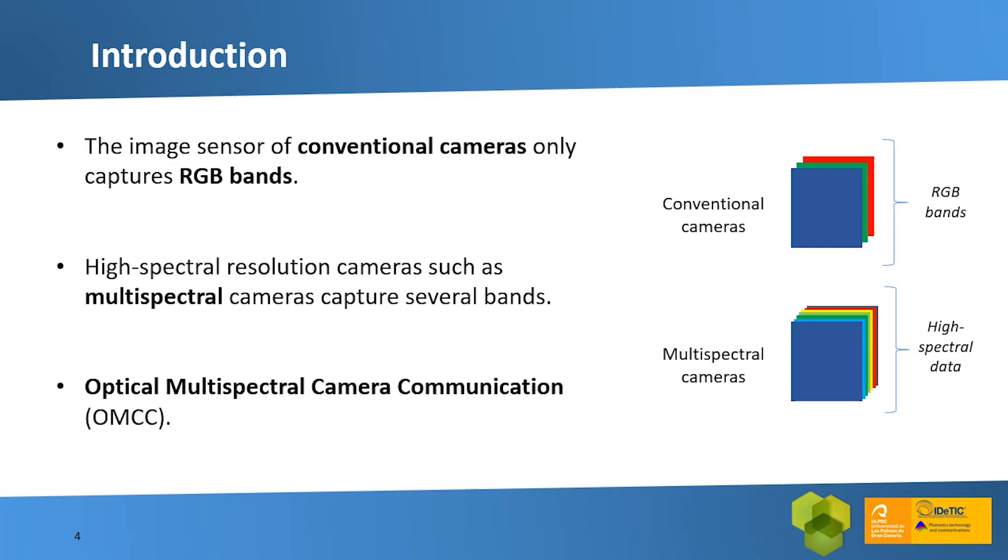However, we propose the use of a camera with high spectral resolution such as a multispectral camera in an OCC system. The main difference between that kind of camera and conventional ones is that the image sensor of the latter only captures RGB images like the human eye. On the contrary, multispectral cameras provide a higher number of bands, much more numerous than the three RGB bands of conventional cameras. In this way, optical multispectral camera communications open up a range of opportunities.